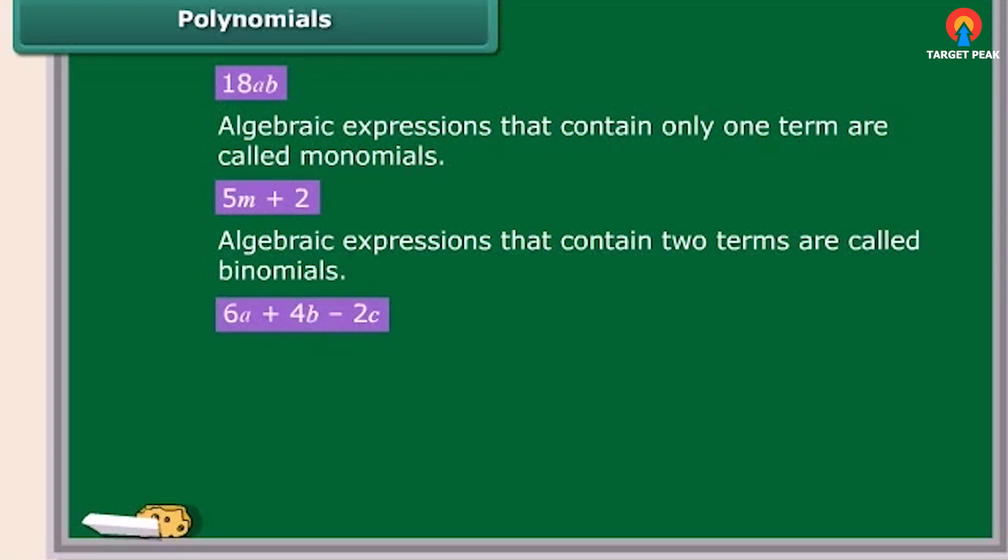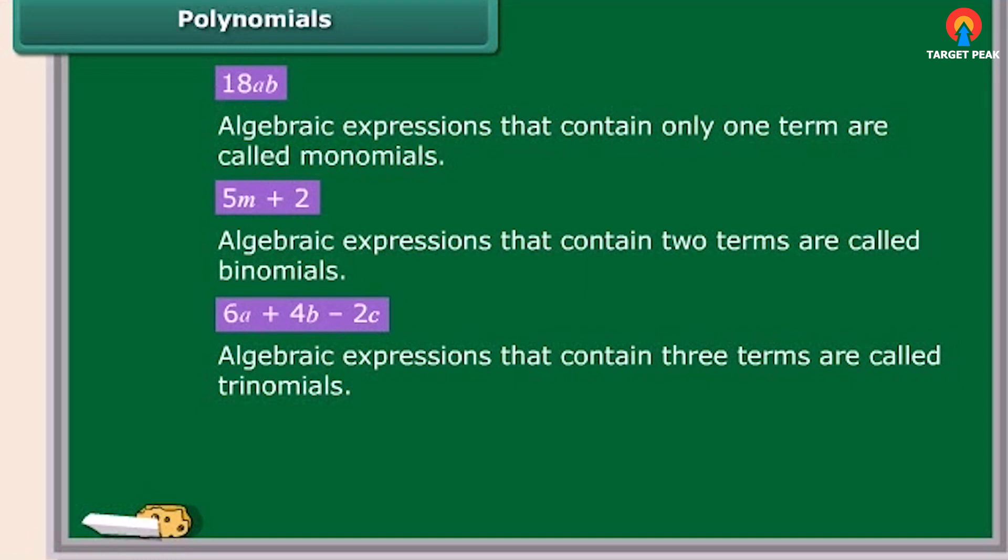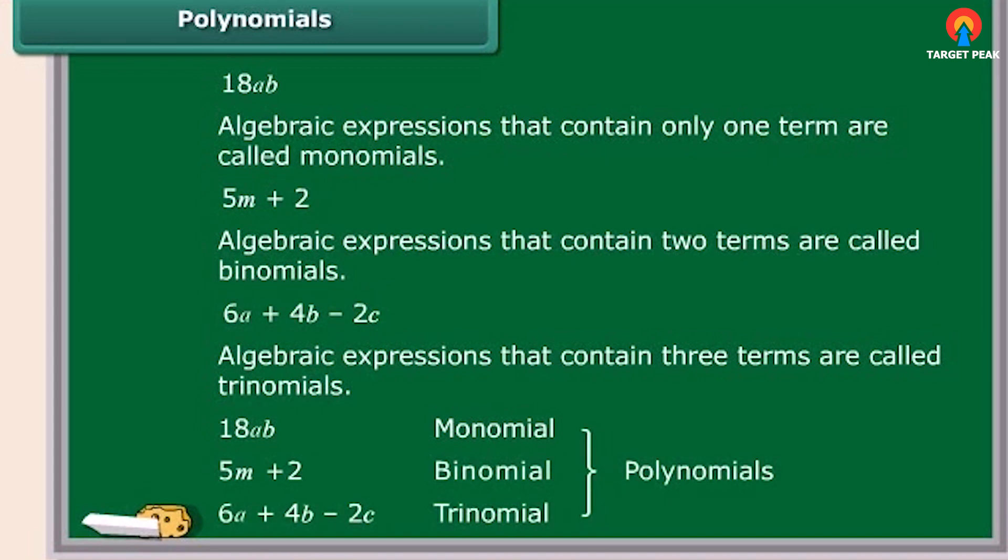The expression 6A plus 4B minus 2C is not a binomial because it has three terms. Right? So, this type of algebraic expression is called trinomial. Remember, all algebraic expressions that have one or more than one terms are called polynomials. Therefore, monomials, binomials, and trinomials are all polynomials.